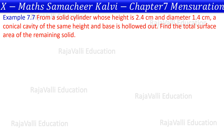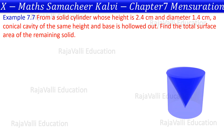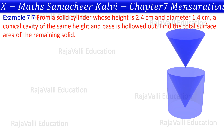The question is: inside a cylinder, we will cut out a cone. The cone's height and diameter are equal to the cylinder's height and diameter. We need to find the total surface area of the remaining solid after cutting the cone.